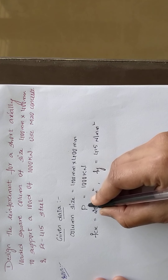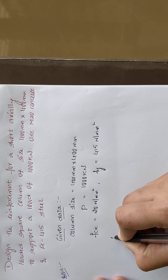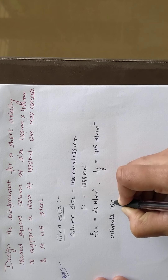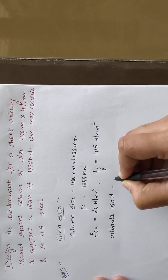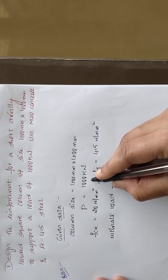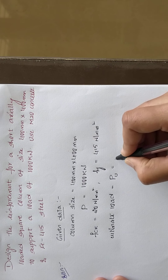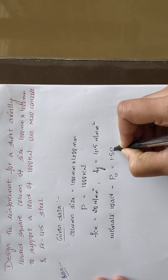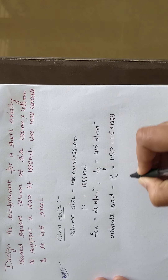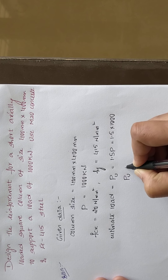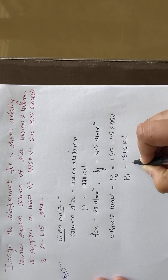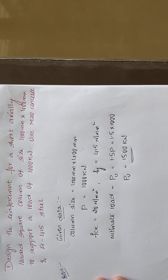Next, calculate the ultimate load Pu. You need to multiply the load value by the partial factor of safety, that is 1.5 multiplied by P. So Pu = 1.5 × 1000 = 1500 kilo Newton. This is your ultimate load.